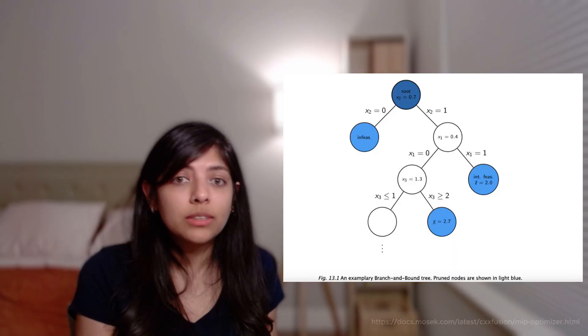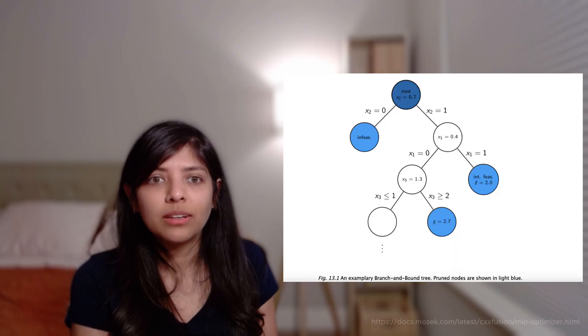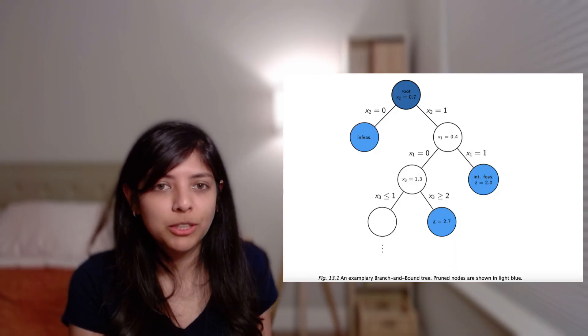Mixed integer programming. Some problems involve yes or no decisions — should we include this item or not? Can we only buy whole units, not fractions? Let's say you want to pack five items into a bag but you can only take two. Each item has a cost and a value, and you cannot pick half of any item. That makes it a mixed integer problem — some decisions are continuous but others must be whole numbers. This helps you search all combinations to find the best one.